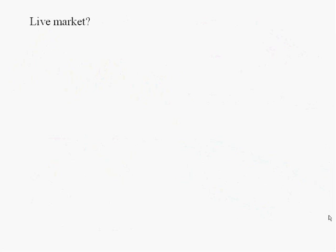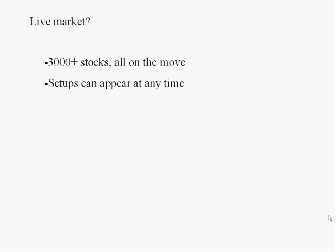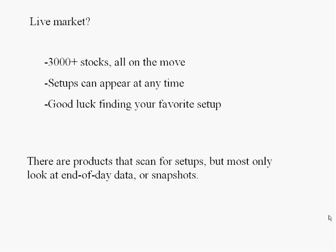But there's one problem: what about the live market? You've got 3,000 stocks all on the move — and that's only if you're looking at stocks with decent volume. If you look at all stocks, that would be something like 6,000. Setups can appear at any time, so good luck finding your favorite setup — it's next to impossible. There are products out there that scan for setups, but those mostly look at end-of-day data or snapshots. That's fine if you're setting up the night before for long-term trading, but it's terrible when it comes to new setups occurring live in the market as it moves.